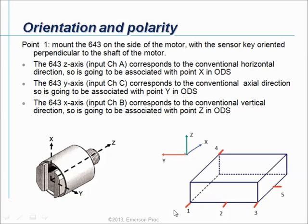This setup is valid as long as we install the sensor in this same direction on all possible points. However, we have to change the convention as soon as we install the sensor in another polarity or another orientation. In this video tutorial I will show you how to configure the job on the CSI 2140 Machinery Health Analyzer, and in a separate video tutorial we will collect data for those 5 points and show how to change the inputs.